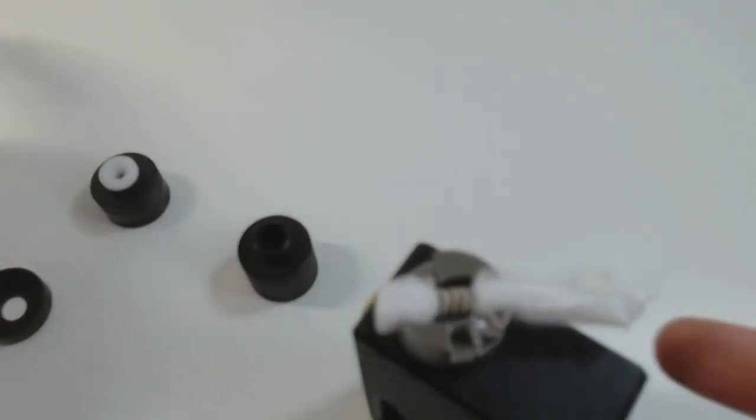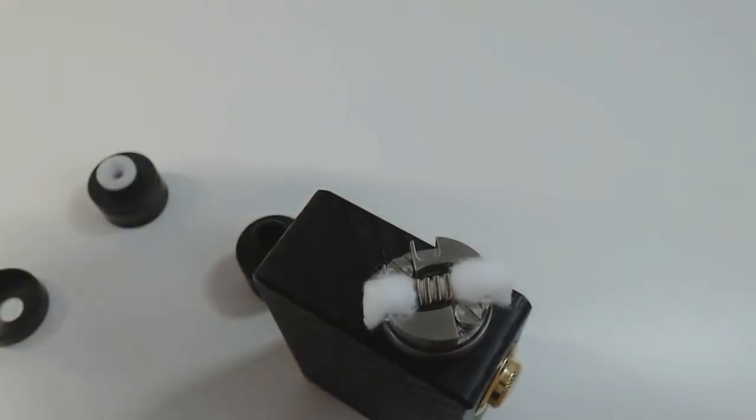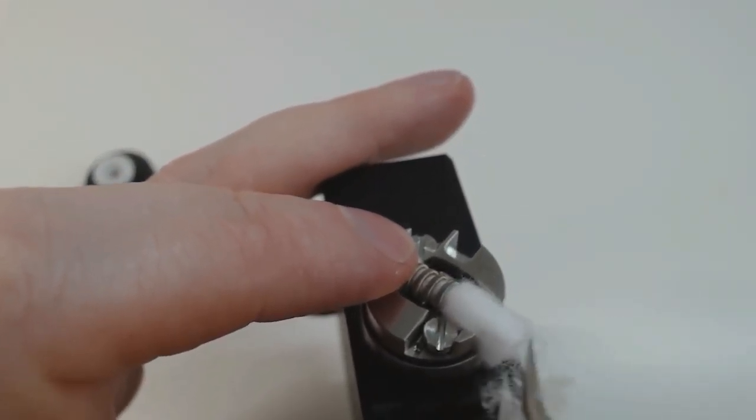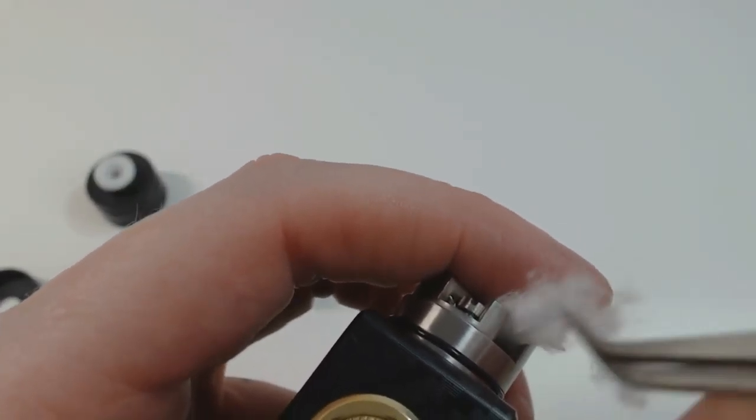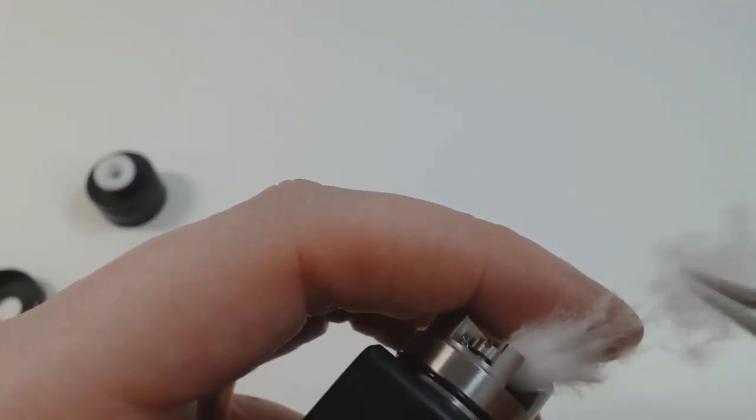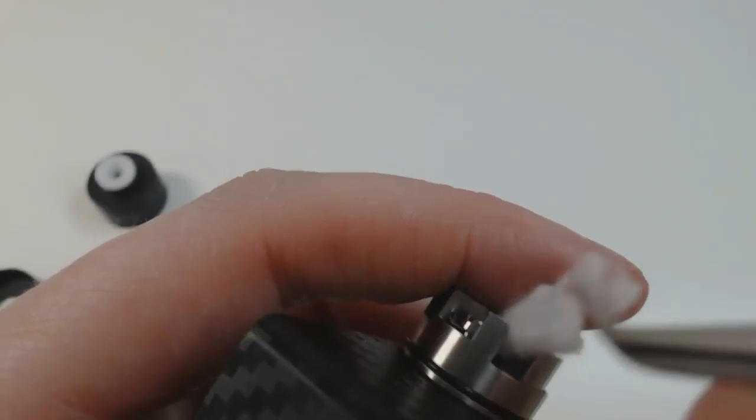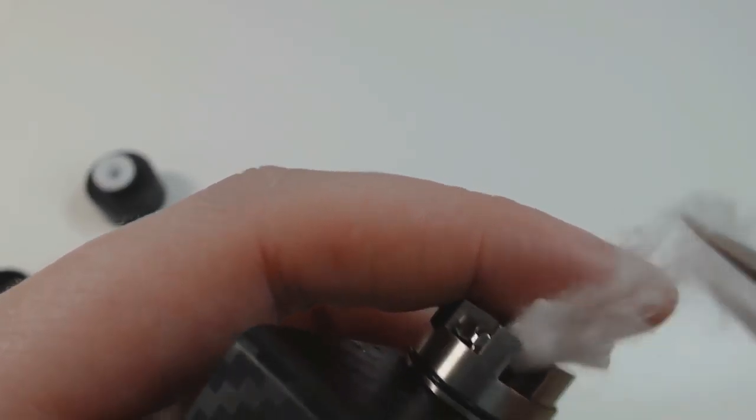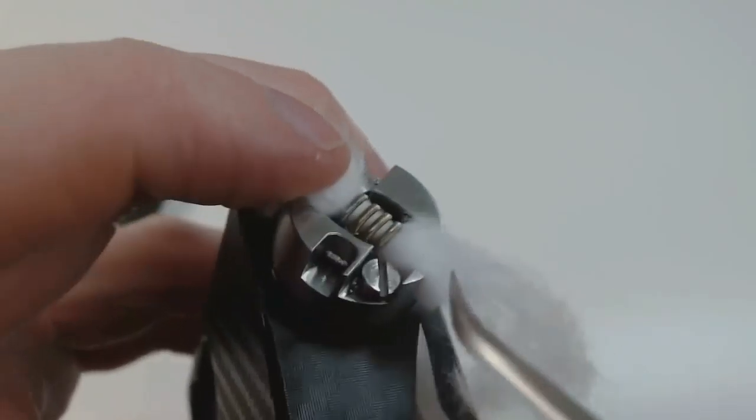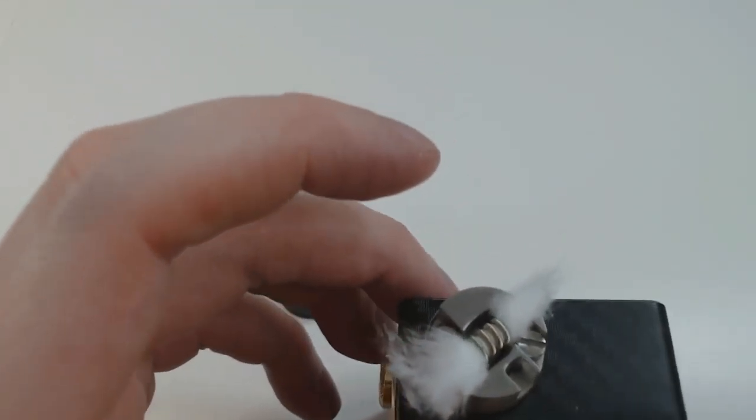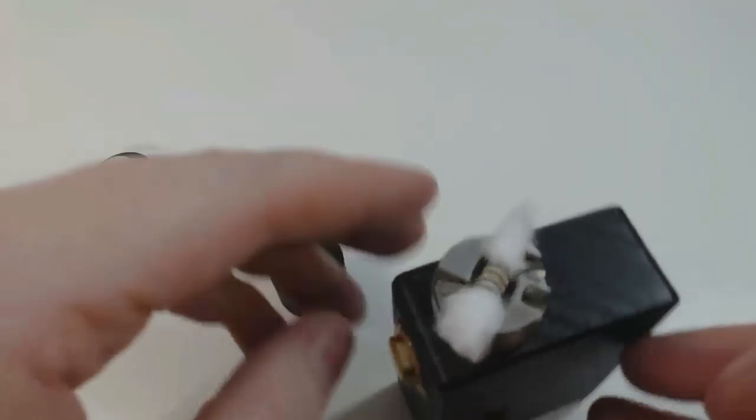So we don't want too much cotton in those channels there. So we'll just snip that off just about there, the same on the other side. And then as always what I like to do is just to thin out those ends with a needle nose tweezers, just to allow the juice to soak up that little bit easier. And then the same on the other side. And we'll just get our scissors and we'll just tidy up those ends just a little bit.